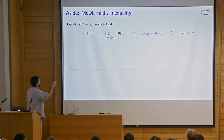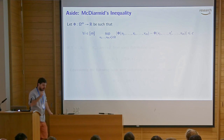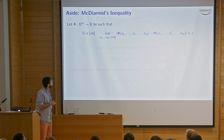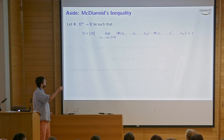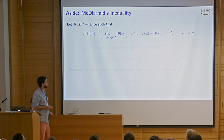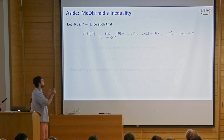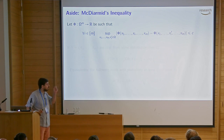What McDiarmid's says is: if I have a function phi that takes m elements from some domain omega and outputs a real number, and this function is such that changing one coordinate cannot change the output too much — specifically, for any coordinate i and any setting of x_1 to x_m, if I replace x_i with some x_i prime, the absolute difference in phi is bounded by c for all such replacements — then the function has bounded differences.